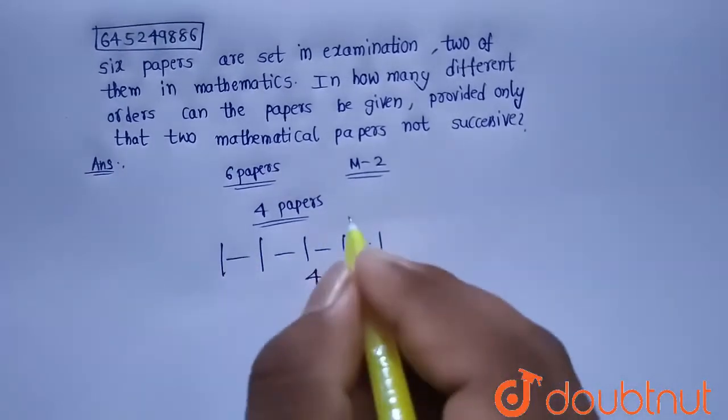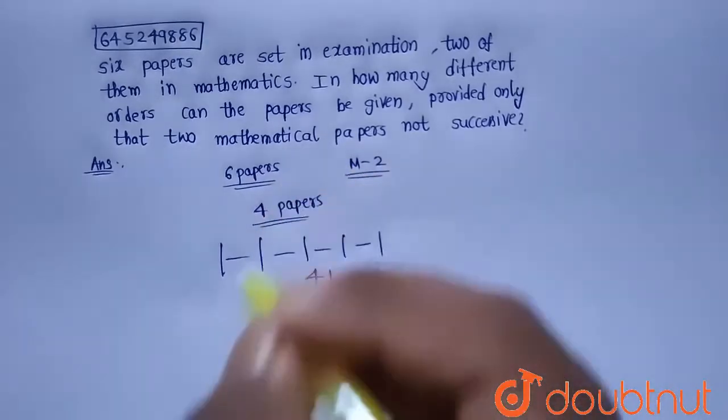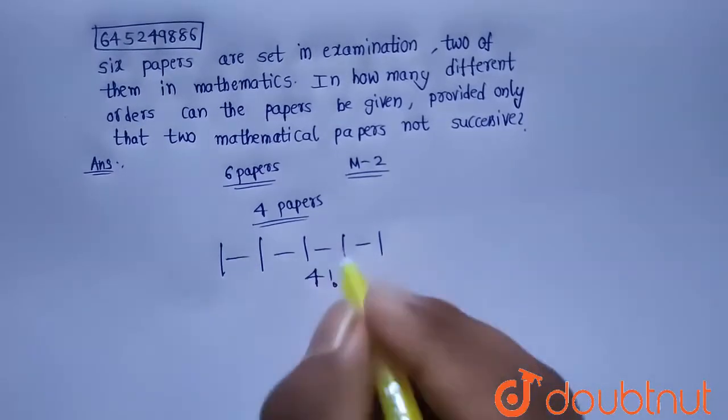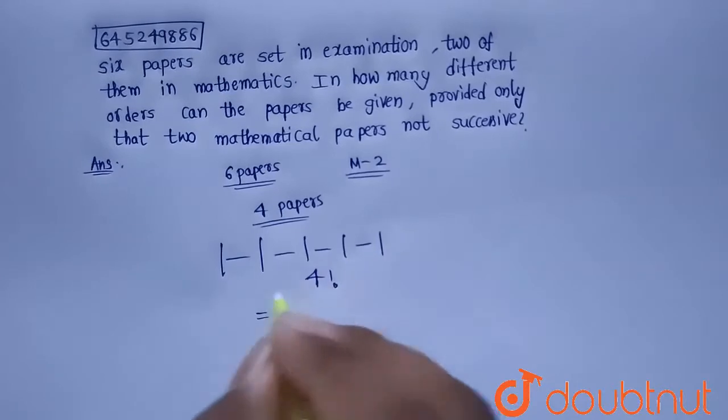And in these five we have to place these two mathematical papers. The number of ways to place this will be, we want only two places out of these five places. So let's select the two places from these five places, that is nothing but 5C2.